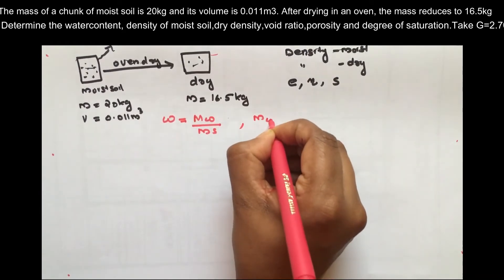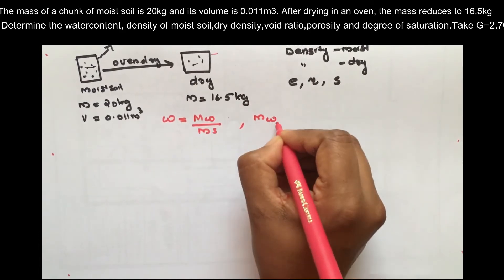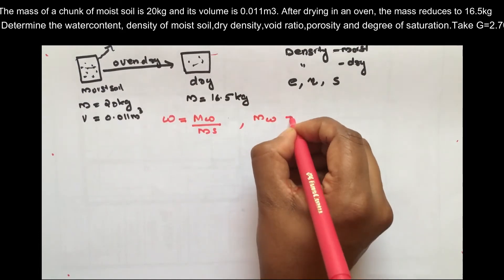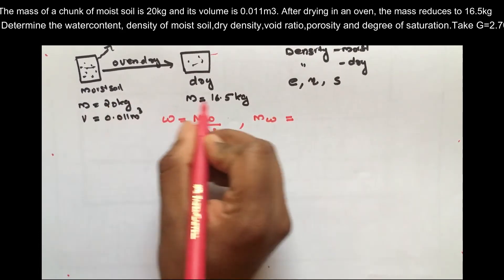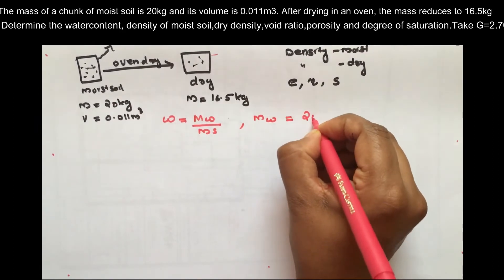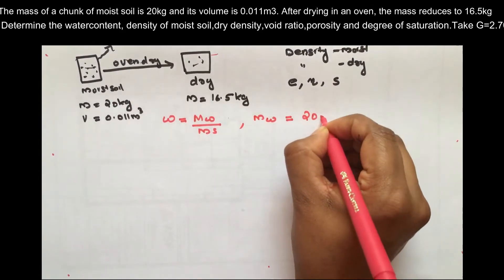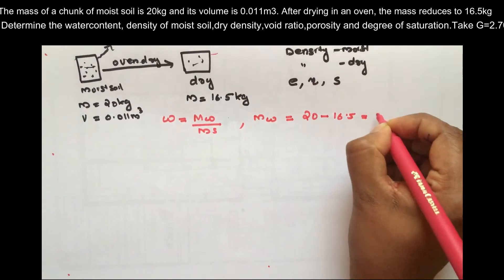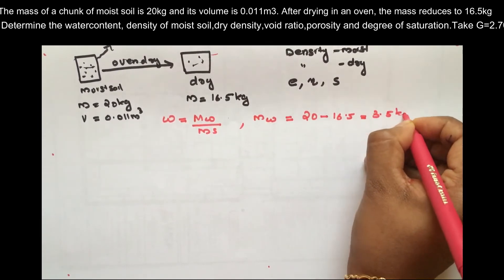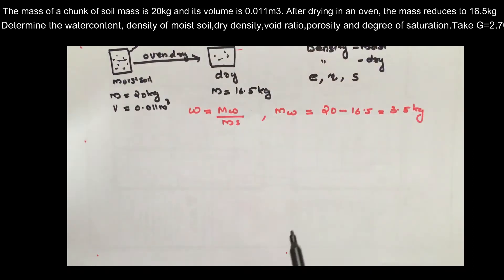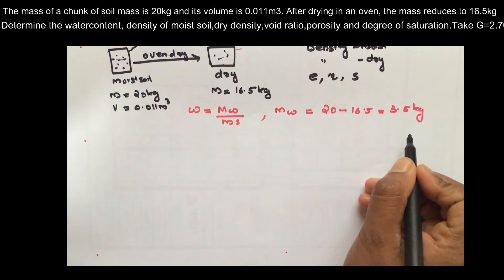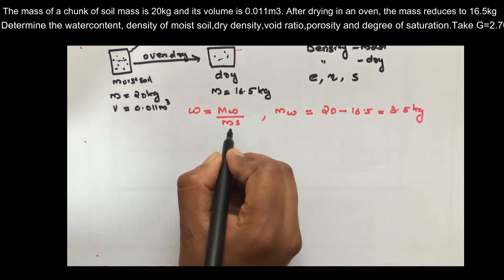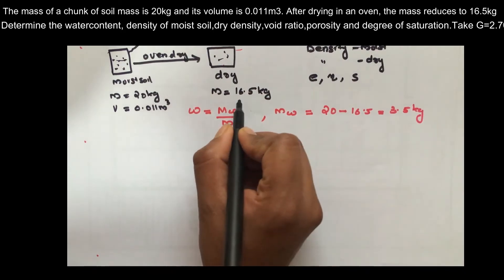The mass of water is equal to 20 minus 16.5, that is 3.5 kg. The mass of water is 3.5 kg. The mass of solids is 16.5 kg.